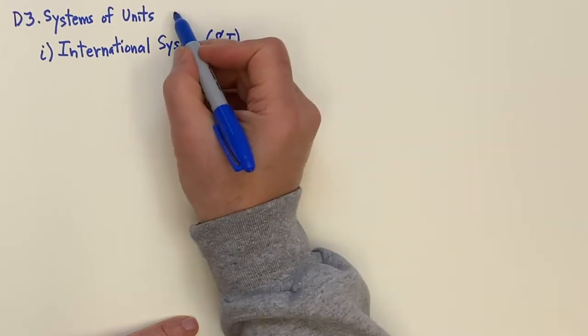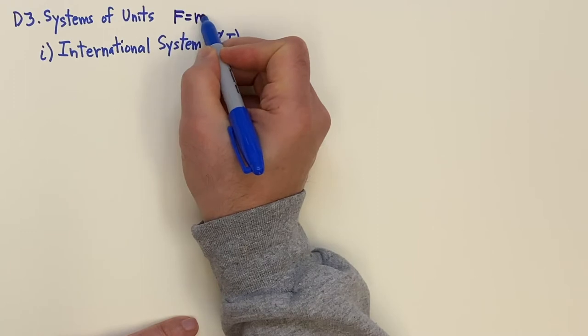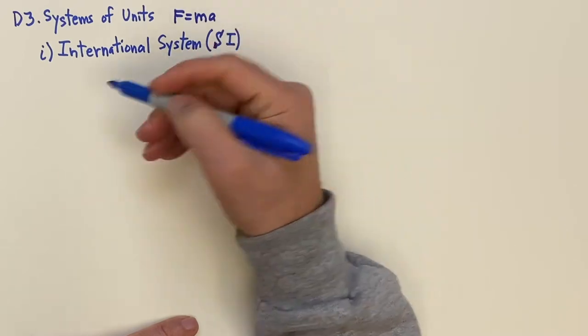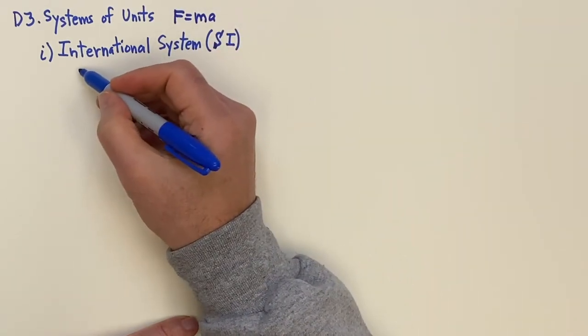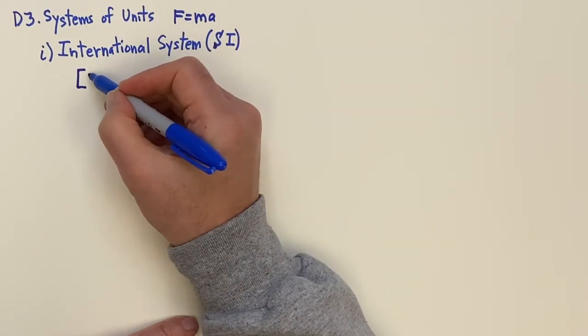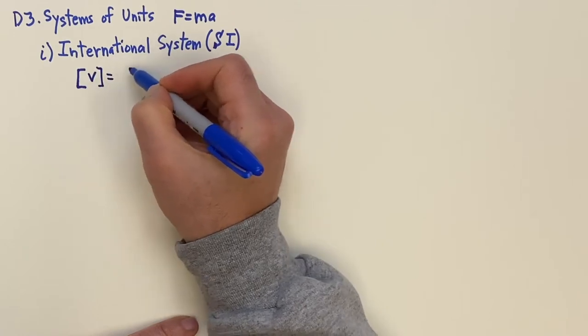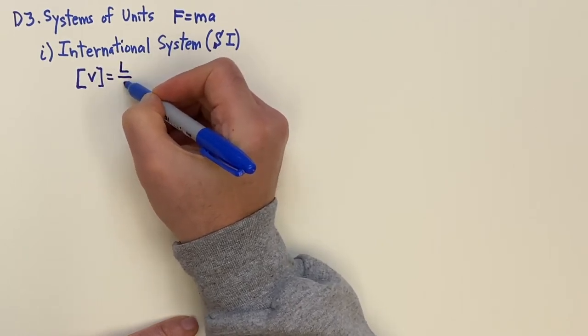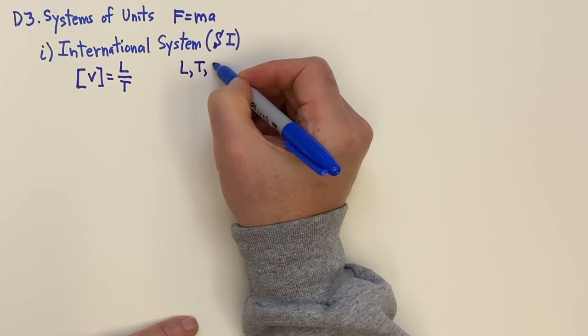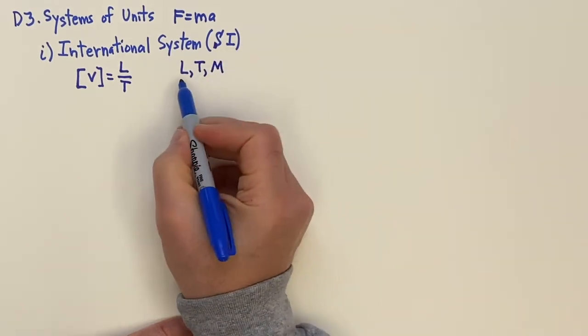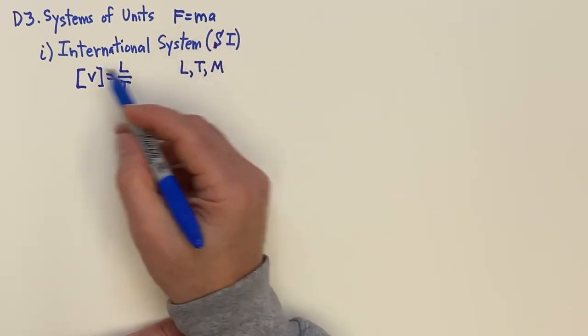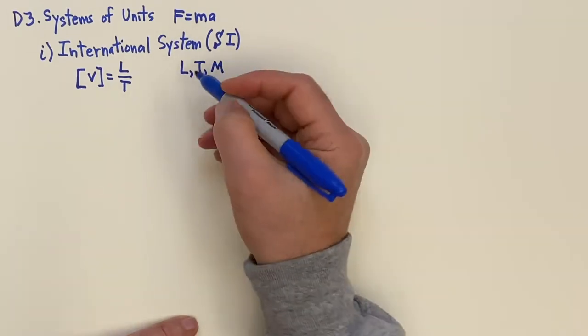And we will use F equals MA to help guide us here. Now when you use dimensional analysis, for example, to use this bracket, if you want the dimensions of, say, velocity, that's going to be length per time. In other words, the big three, your length, your time, and your mass. So this is independent of units, like just say a length, a time, and a mass. And we're going to look at specific units in this section.